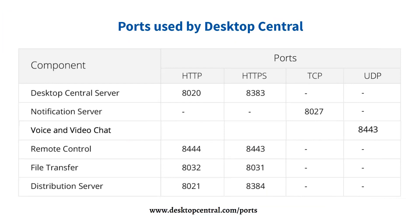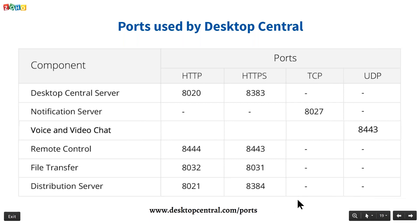These are the ports used by Desktop Central. You may need to open them on the server to use certain features. For example, voice and video chat works on UDP port 8443. Agent-server communication happens on port 8020, and agents can contact the server securely on port 8383. Agent-to-server notification happens on port 8027. For more details on ports, visit desktopcentral.com/ports.